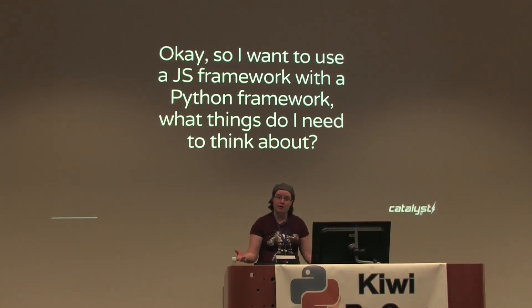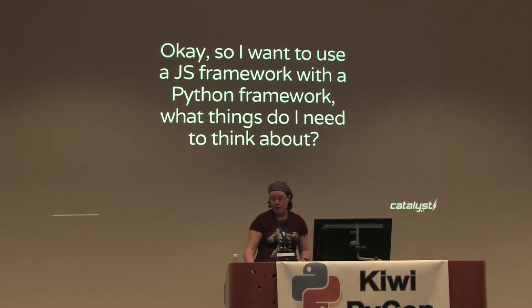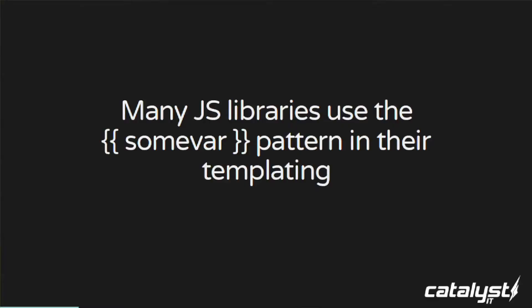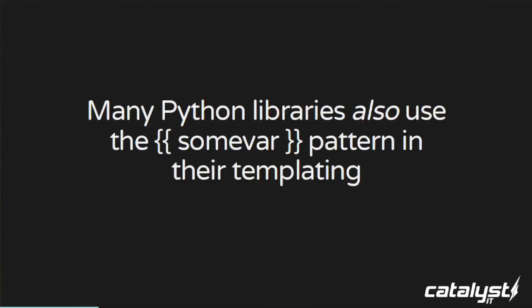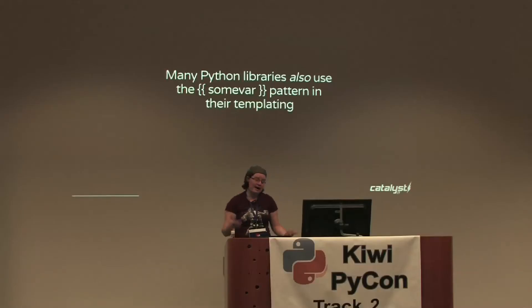So what do you need to think about to get a JavaScript framework working nicely with your Python framework? Here's one simple gotcha that might trip you up early on. A lot of JavaScript libraries use curly braces as their templating pattern — you wrap a variable in curly braces to signal it needs to be interpreted. Unfortunately, a lot of Python libraries also use that pattern. The Python templating engine will look through your template and say, 'that's a Python variable — wait, I can't find it,' and it's all going to go pear-shaped.